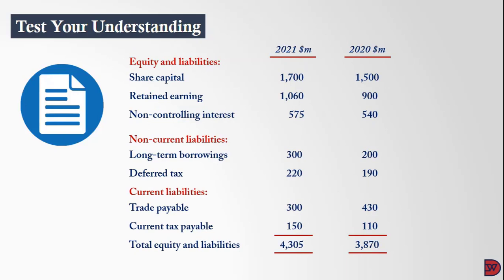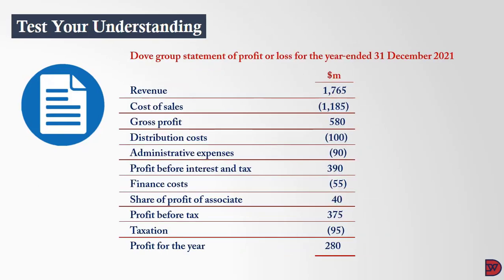Moving on to the equity section, we have share capital, retained earnings, and non-controlling interest. Non-current liabilities include long-term borrowings and deferred tax for both years. Current liabilities include trade payables and current tax payables, leading to total equity and liabilities equaling total assets: 4 billion 305 million dollars for 2021 and 3 billion 870 million for 2020.